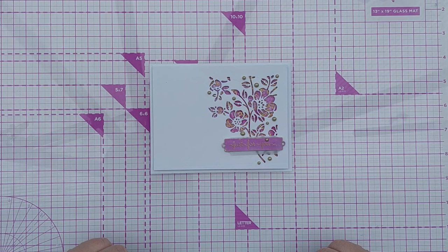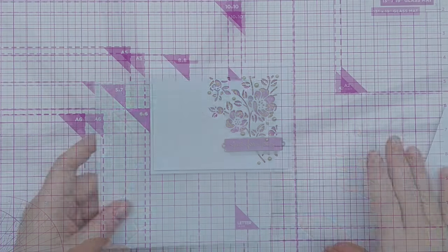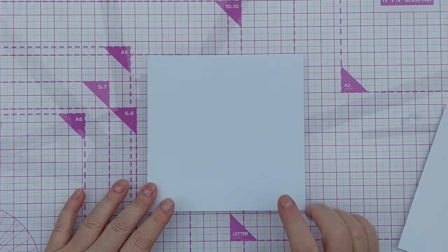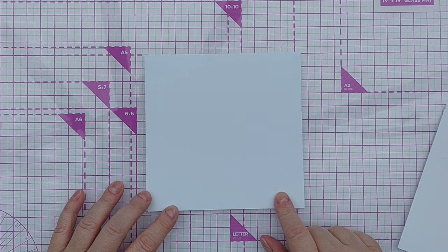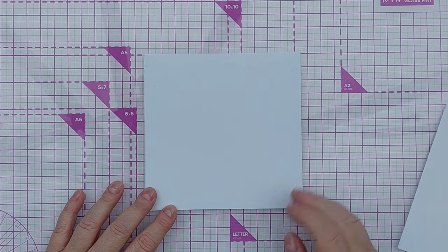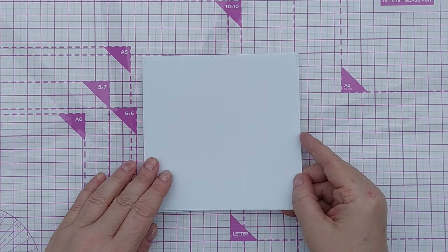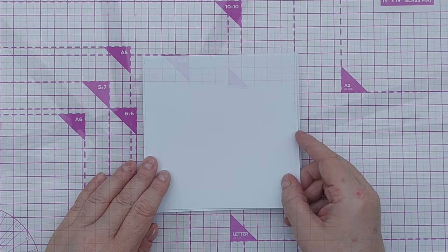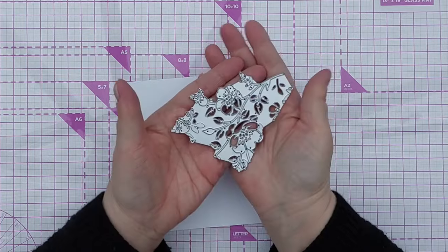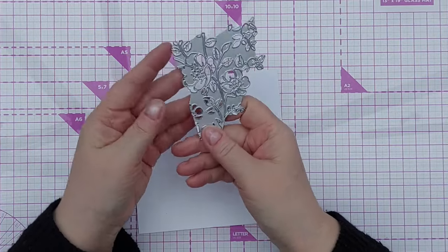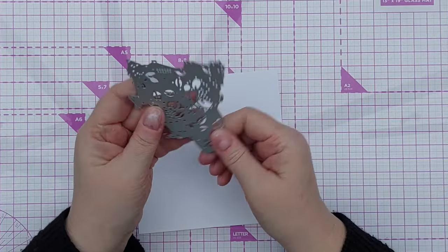For my card blank I'm using a five and three quarter by five and three quarter inch smooth white cardstock card blank. I've chopped another one in half to create this panel which is going to sit on top. From this panel I'm going to cut this aperture. This is a Sizzix die, it's a mixed media one and it cuts flowers.